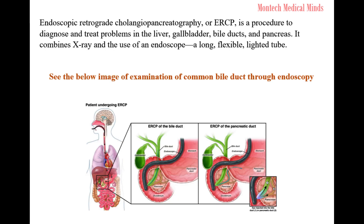Endoscopic Retrograde Cholangiopancreatography, or ERCP, is a procedure to diagnose and treat problems in the liver, gallbladder, bile ducts, and pancreas. It combines X-ray and the use of an endoscope — a long, flexible, lighted tube. See the image below showing examination of the common bile duct through endoscopy.